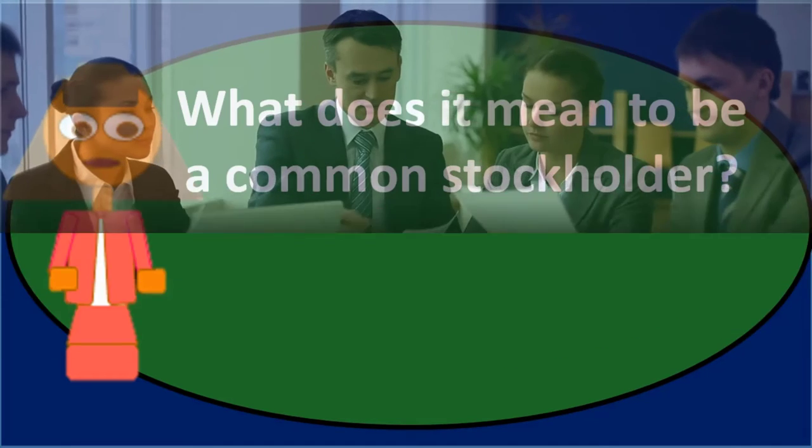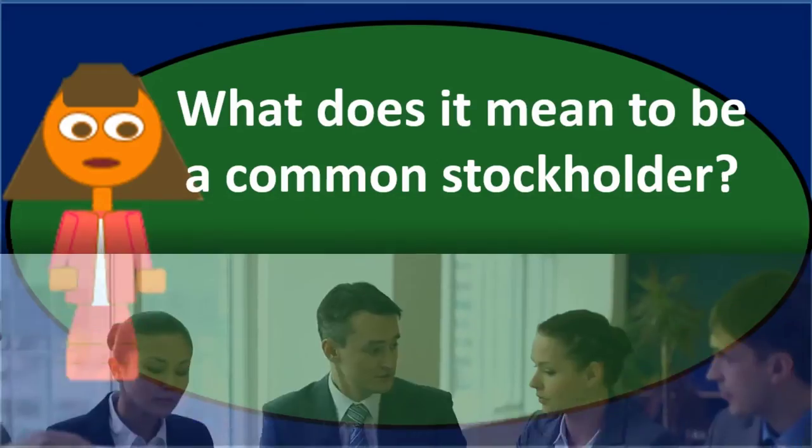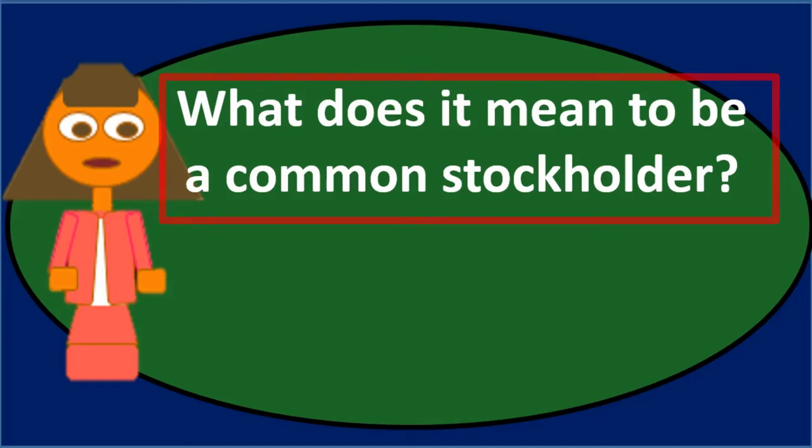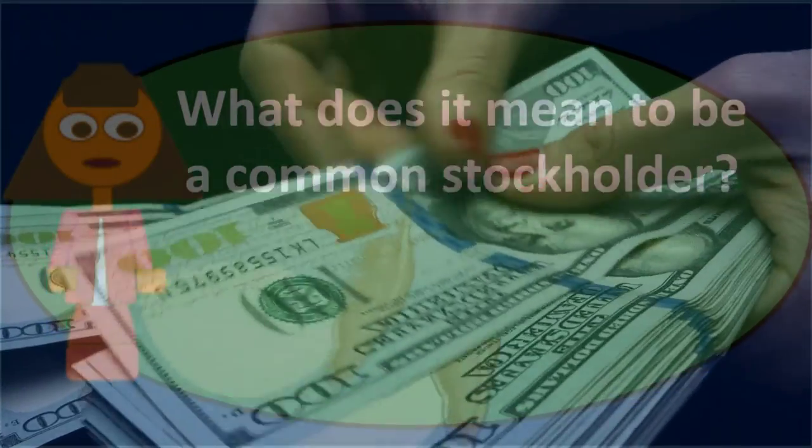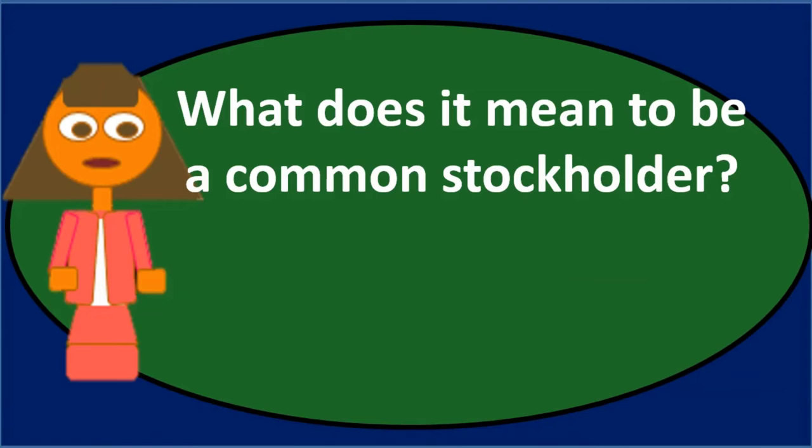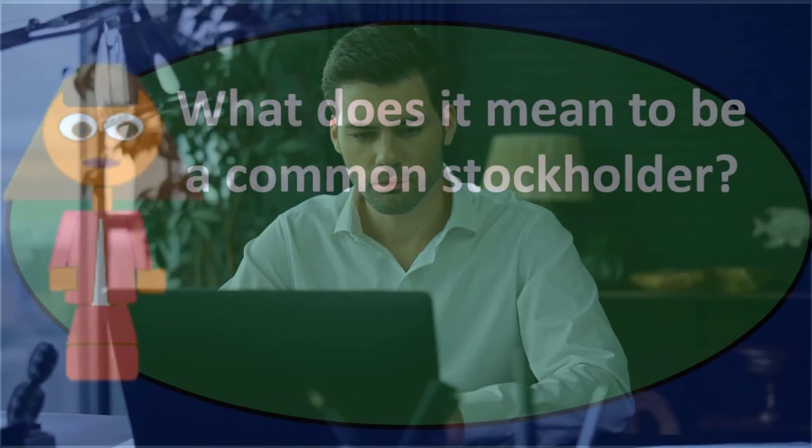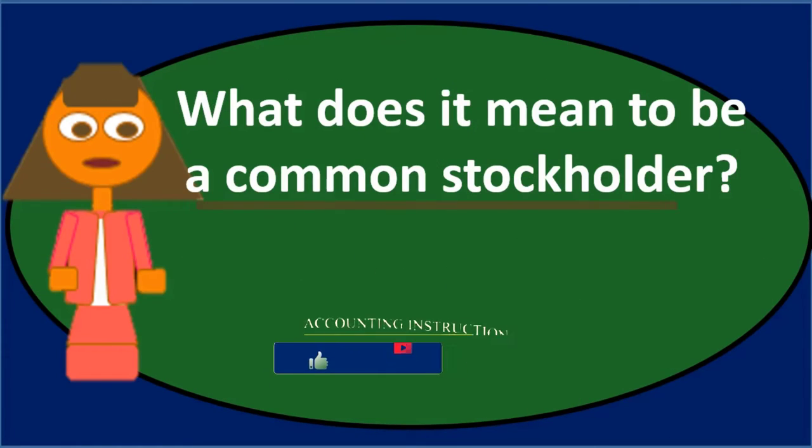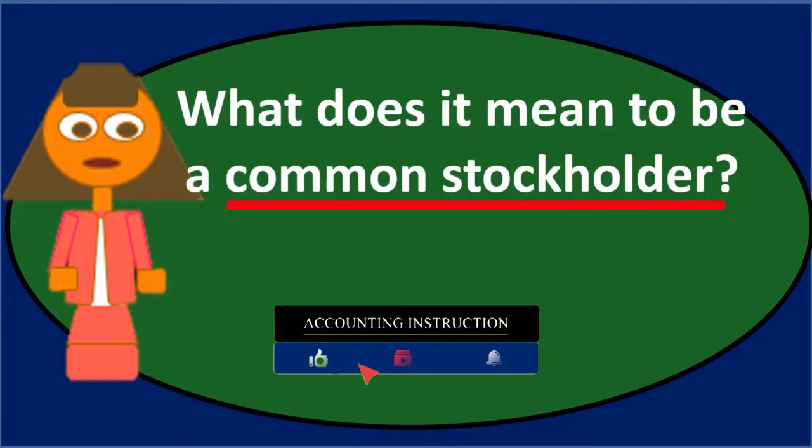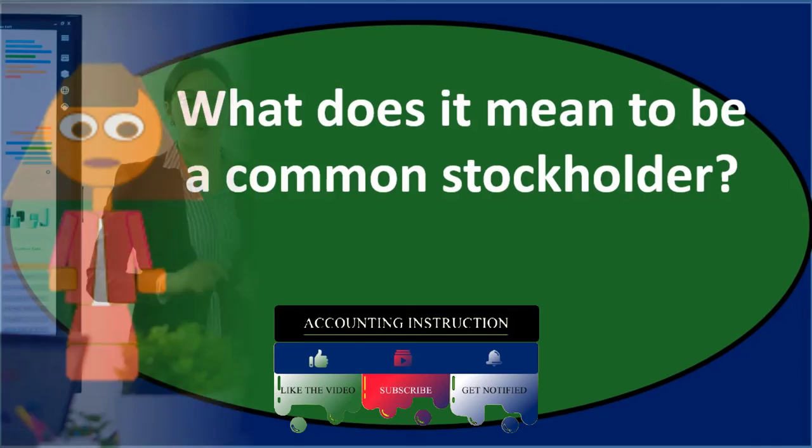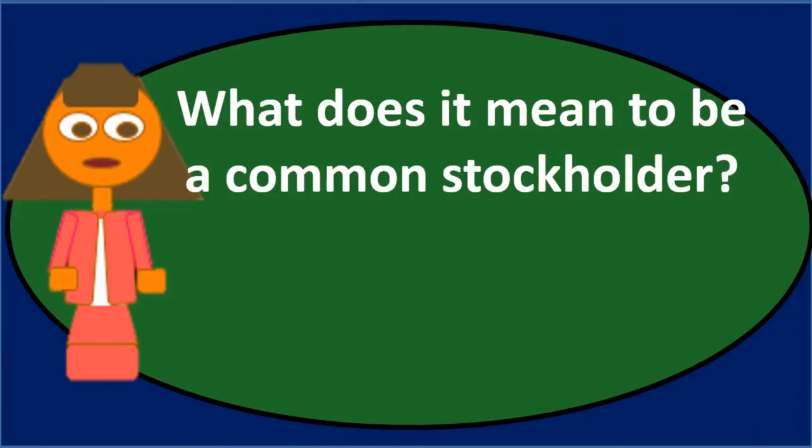This is similar to a corporation, except we cannot just give a draw to an individual like in a partnership. In a corporation, if we give some money back, we have to give it to all stockholders in an even amount. For example, if one individual has 51% of the stock, they cannot request a dividend for only their shares without giving the same proportional dividend to all other stockholders, because all stocks are the same.